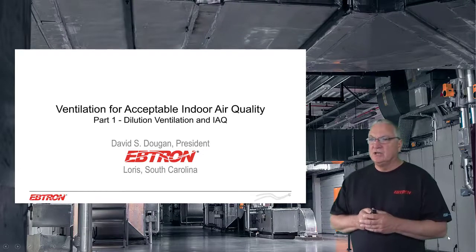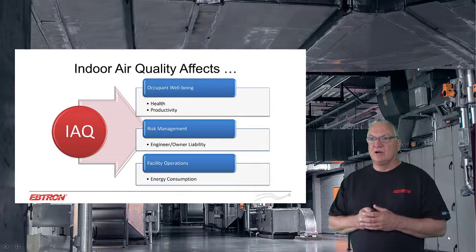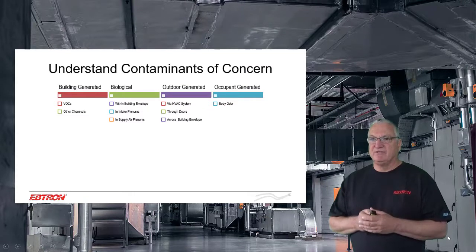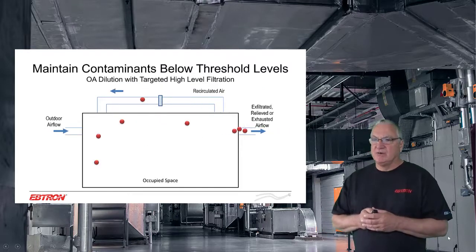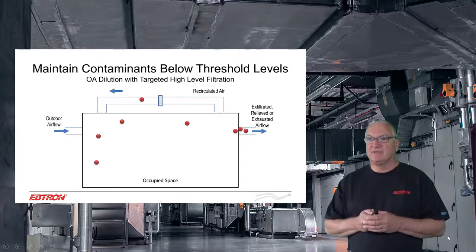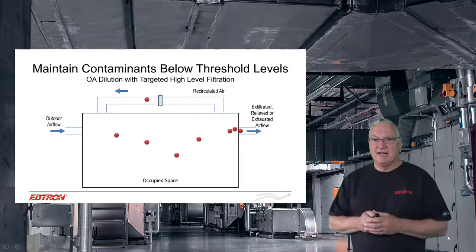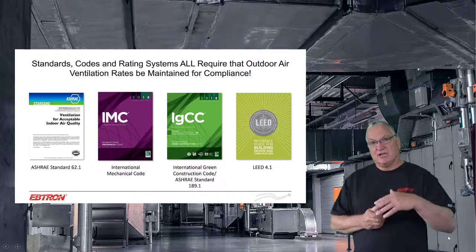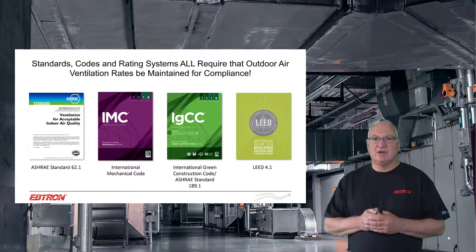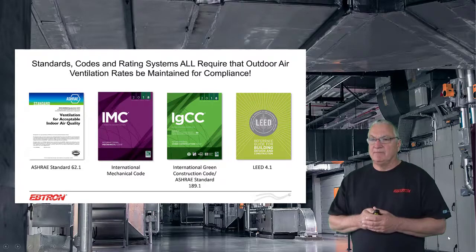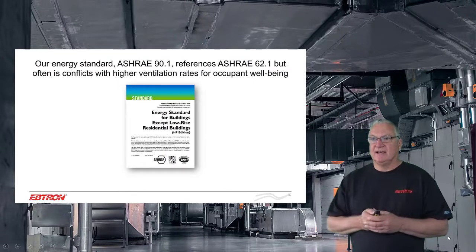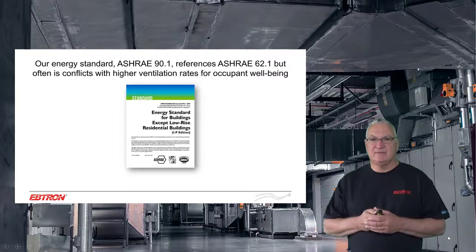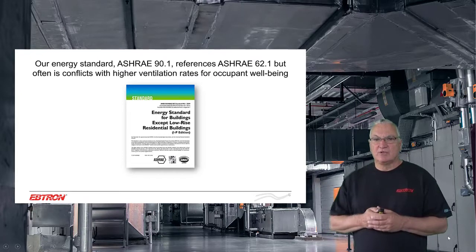Part one: dilution ventilation and IAQ. We're going to talk about how indoor air quality affects occupant well-being, risk management, and facility operations. We'll take a brief look at understanding the contaminants of concern, particularly now that we have to deal with airborne pathogens. We'll look at what you have to do to maintain contaminants below threshold levels — a combination of dilution ventilation, outdoor air, and high-level filtration. We'll also look at the standards and codes, particularly ASHRAE Standard 62, the International Mechanical Code, and Standard 90.1, and how energy concerns conflict with what we're trying to do for ventilation.